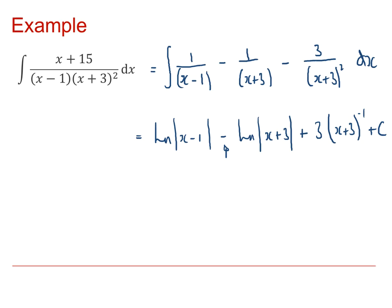So that means that we can write the logarithm as the logarithm of x minus 1 divided by x plus 3. And then expressing the second part as a fraction 3 over x plus 3 plus the constant.